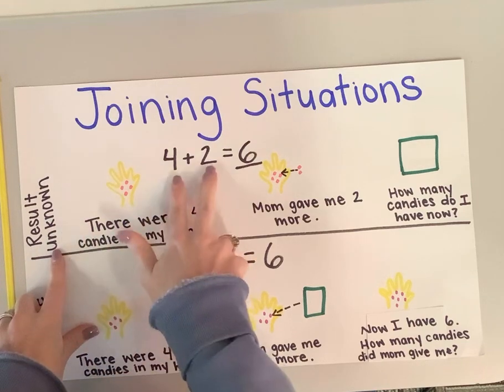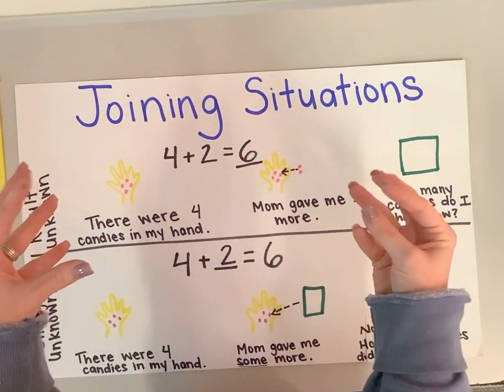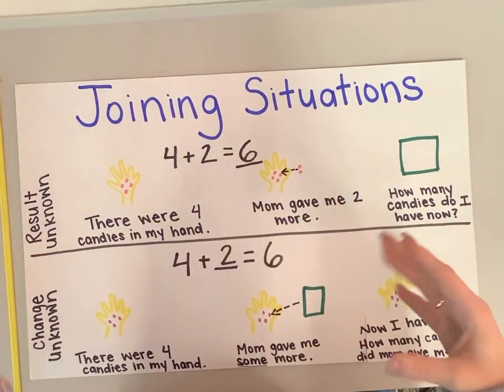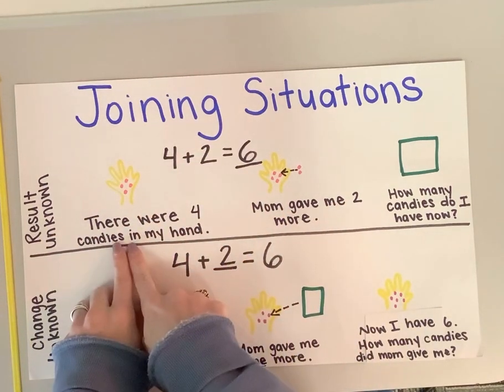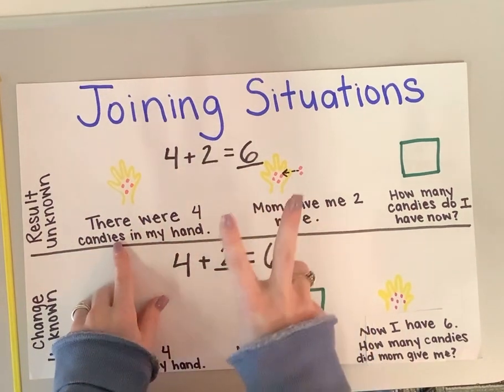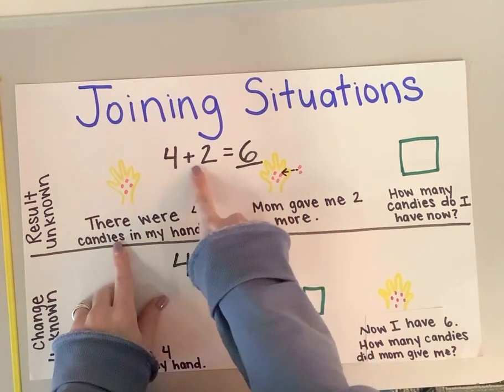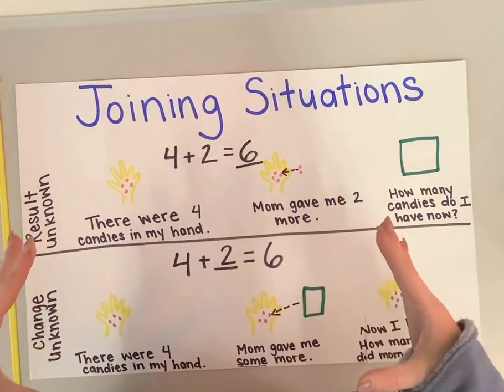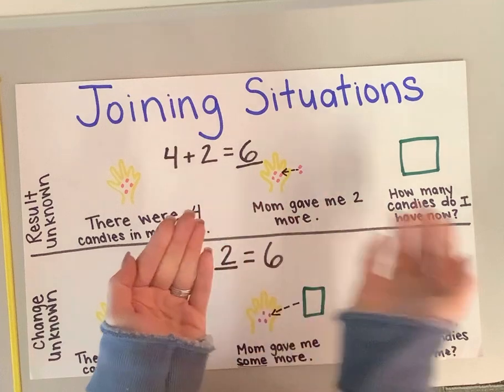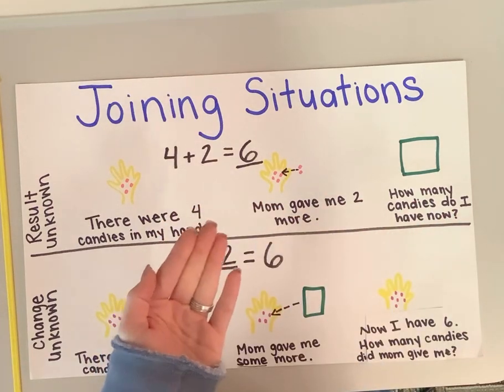That means that we're given two numbers and we're putting them together to make a bigger number. If I have four candies in my hand and my mom gave me two more, four plus two equals a bigger number. I had four and I got more. I got more candy in my hand.